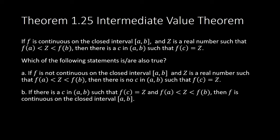Statement b: If there is a c in (a, b) such that f(c) equals Z and Z is between f(a) and f(b), then f is continuous on the closed interval [a, b].